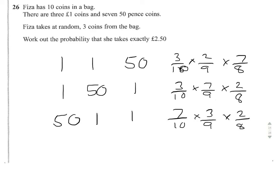So we have got, basically, three lots of three over ten, times two over nine, times seven over eight.